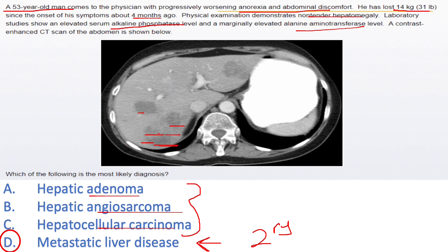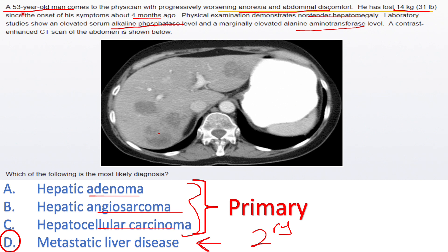Two reasons to choose metastatic liver disease: first, the multiple separate lesions suggest metastatic spread via the bloodstream — for example from the colon — landing in multiple foci, unlike a primary hepatic lesion which starts as one focus and extends. Second, metastasis is the most common neoplasm of the liver — more common than hepatocellular carcinoma. Also, HCC typically occurs in someone in their 60s–70s with advanced cirrhosis from hepatitis B/C or alcoholic liver disease, not in their early 50s.